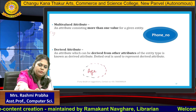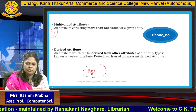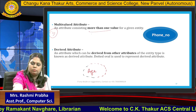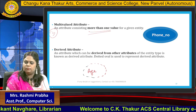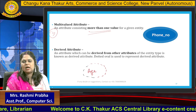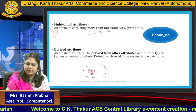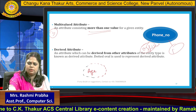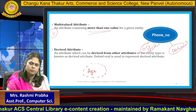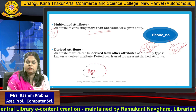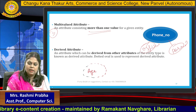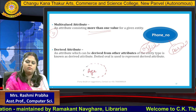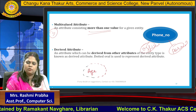The third category of attribute is multi-valued attribute. Multi-value means more than one value — like a phone number. One can be your official number and one your personal number. You can have two, three, four, or five numbers. So phone number is an attribute which can hold more than one value. When a single attribute has several values, it comes under multi-valued attribute.